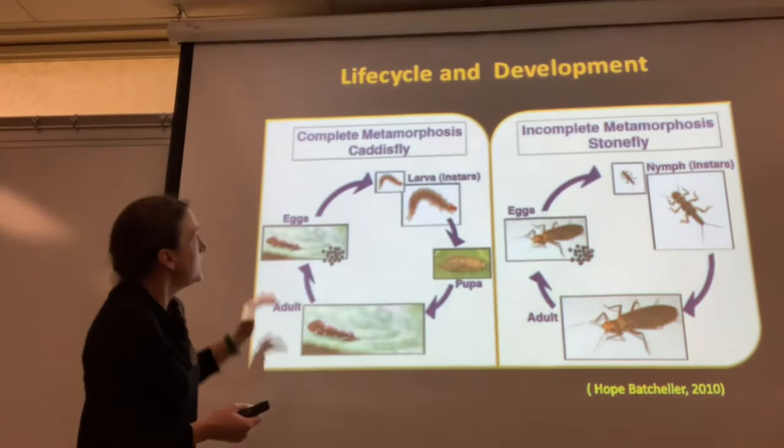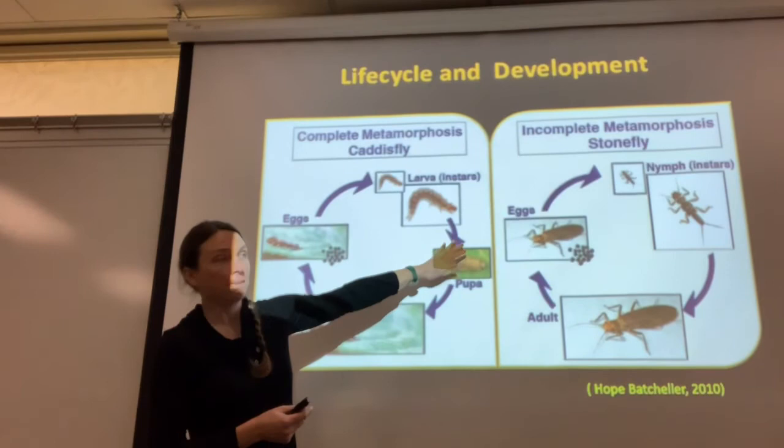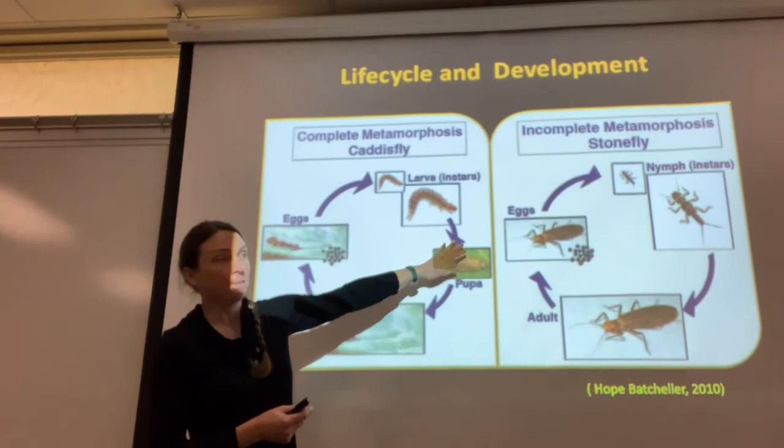This would be different for a holometabolous organism like a caddisfly. You start off with eggs, then you get larvae going through instars, but then it turns into a pupa and it pupates. This is the stage in which it turns into an adult. The pupa then metamorphoses into an adult in the complete metamorphosis life cycle.